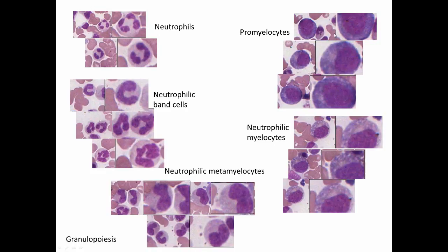The large amount of ribosomes in the cytoplasm makes it blue, and these cells have a lot of cytoplasm. Essentially, we follow the cytoplasm going from the typical gray, picking up some blue, and ultimately having blue and pink with azurophilic granules. The nucleus starts lobulated, becomes less condensed and more oval, and is ultimately an oval euchromatic nucleus in the most immature form.